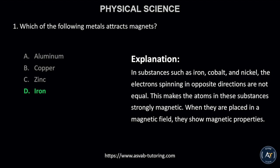This is because in substances such as iron, cobalt, and nickel, the electrons spinning in opposite directions are not equal. This makes the atoms in these substances strongly magnetic. When they are placed in a magnetic field, they show magnetic properties.